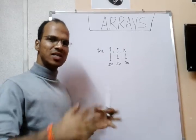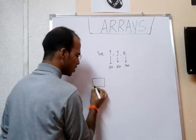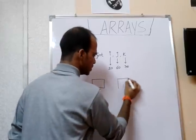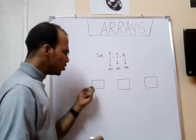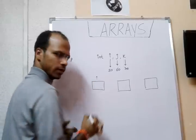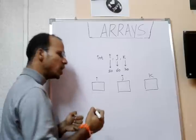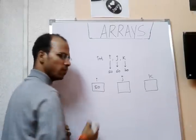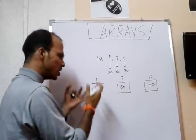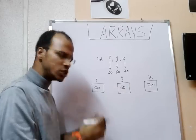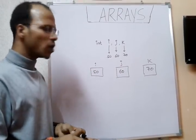Let's imagine this like buses. This is one bus, this is a second bus, and this is a third bus — normal traveling buses. This bus is named i, this is named j, this is named k. Every bus has a different value: i has 50, j has 60, k has 70. These are totally different buses, each storing integer values.